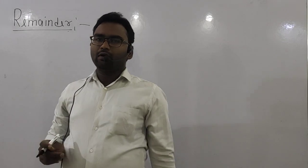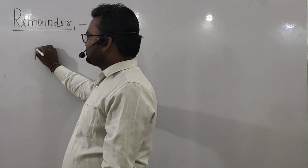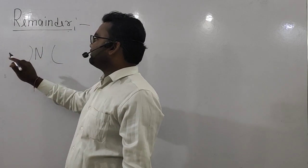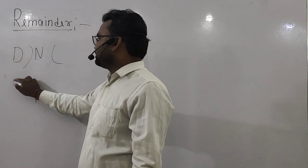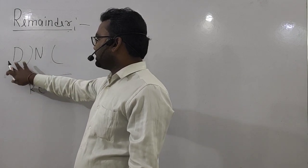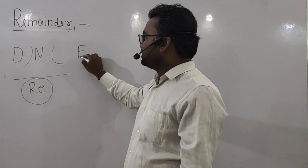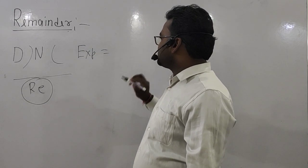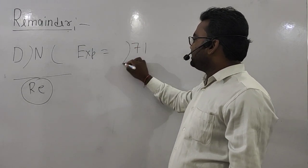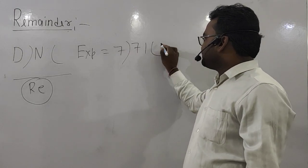First of all, what is remainder? Suppose any number N is divided by any divisor D. Let's take an example: suppose the number is 71, divided by 7. So 7 goes into 71 — 7 times 10 is 70.